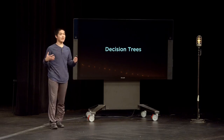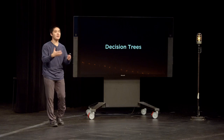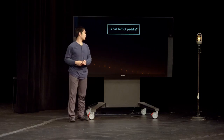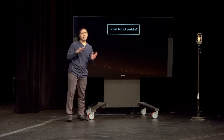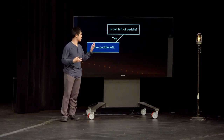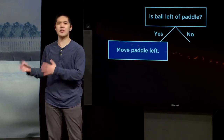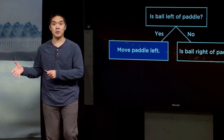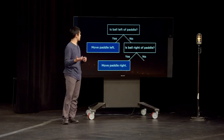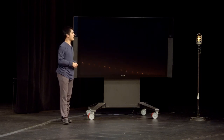Decision trees are just a way of representing a decision that a computer might make by asking questions. Depending on the answers, we might ask another question or make some sort of decision. For this paddle game, we could create a decision tree by asking: is the ball to the left of the paddle? If yes, move the paddle to the left. If no, ask another question: is the ball to the right of the paddle? If yes, move the paddle to the right. If no, that means the ball is aligned with the paddle, so we don't move at all.